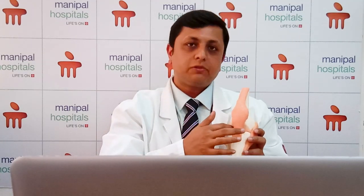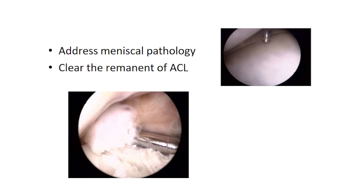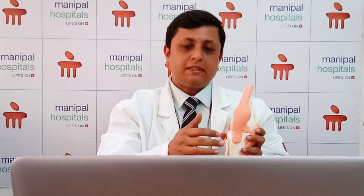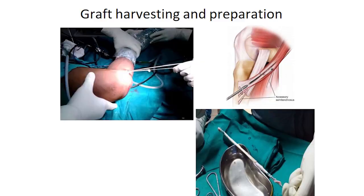First we do a diagnostic arthroscopy — we put the arthroscope and examine all the ligaments including the ACL, PCL, the menisci or cushions, and the cartilage. Before actually performing the surgery, we visualize and reconfirm our diagnosis, seeing the anterior cruciate ligament to determine the extent of the tear. Once this is done, we take the graft from the patient and prepare it as closely in resemblance to the anterior cruciate ligament as possible.